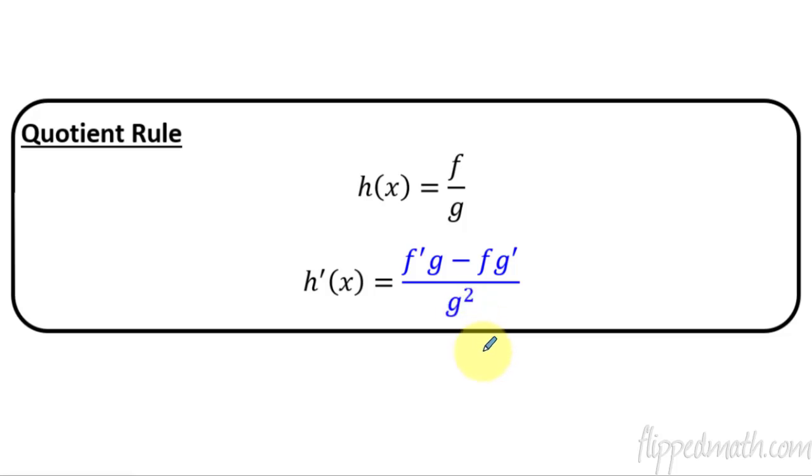now in the quotient rule, you also have to divide by g squared. Whatever g is, you square it. So don't take the derivative of the bottom, notice it's not a g prime right there on the bottom, it's not g prime squared, it's just a g squared. So get that written down, and let's practice with it.